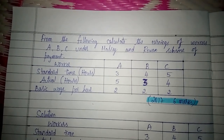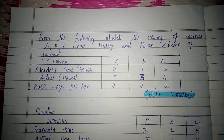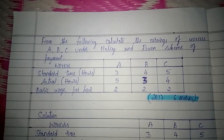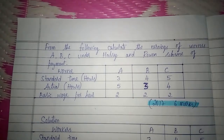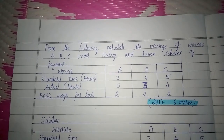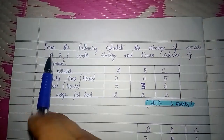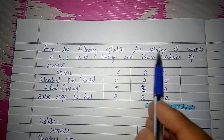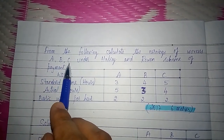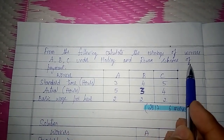Hello students. In this video let us learn how to calculate the earnings of three workers under Halsey plan and Rowan's plan. Here they have given the information to calculate the total earnings of the workers in two different methods, that is Halsey plan and Rowan's plan. From the following, calculate the earnings of workers A, B, C — three workers in a firm — under Halsey plan and Rowan scheme of payment.